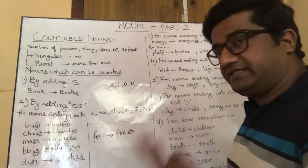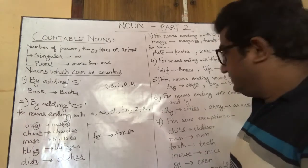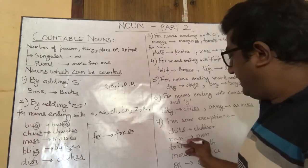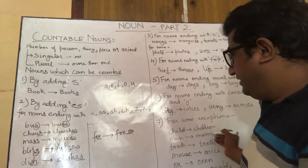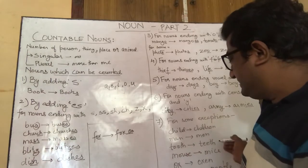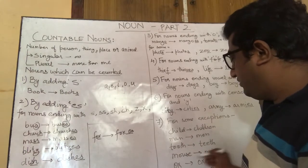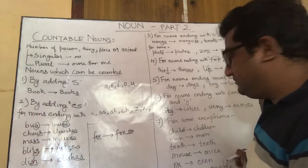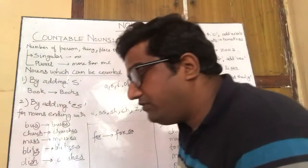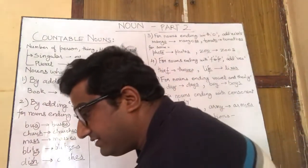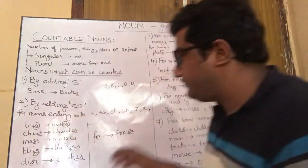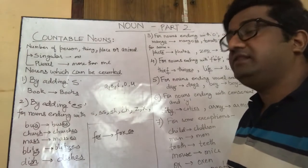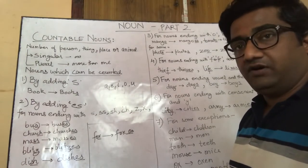There are some exceptions. For example, child becomes children, man becomes men, tooth becomes teeth, mouse becomes mice, ox becomes oxen, and person becomes people. There are no specific rules for these kinds of words — you have to learn them as you go along.